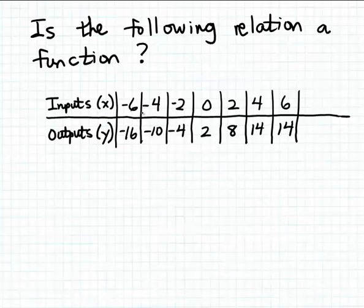Remember, a relation is just a set of ordered pairs. Here we have our ordered pairs arranged in columns. The inputs, or x-coordinates, or first coordinates of each ordered pair are in the first row of the table, and the outputs, or y-coordinates, or second coordinates are in the second row of the table.